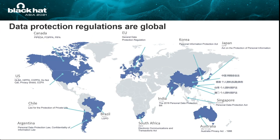To protect personal and private data, many countries and regions have put in place strict data protection regulations. For example, in the U.S. we have the well-known CCPA, and in the European Union there is GDPR. Various countries in Asia have also enacted data protection regulations. Next, we'll discuss what requirements those regulations introduce and what implications they have for developers and device manufacturers.